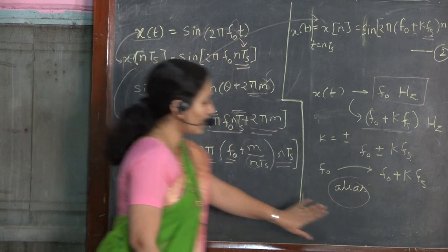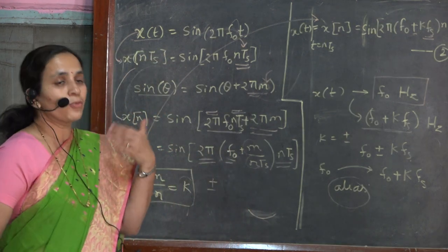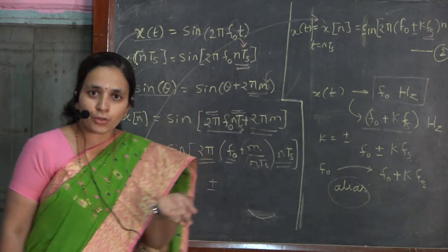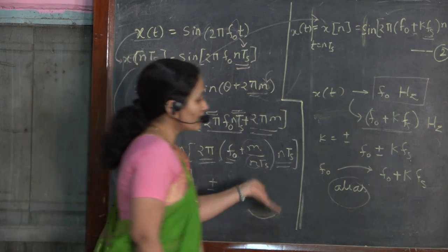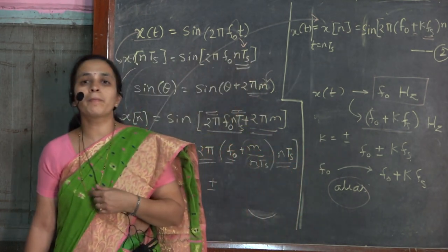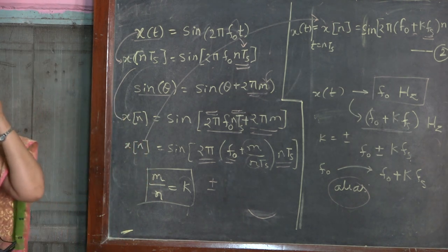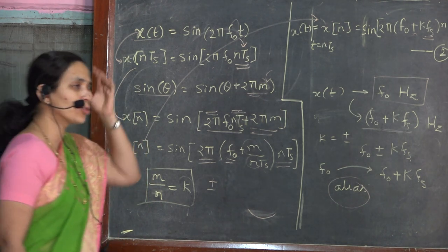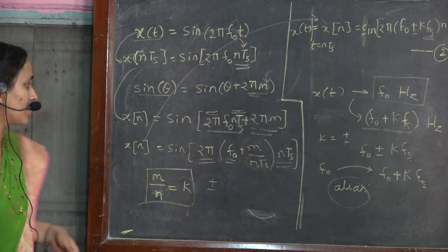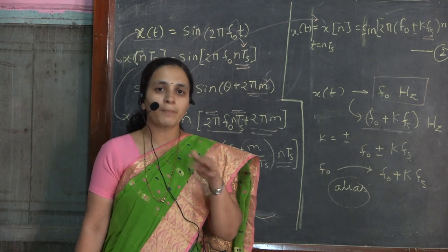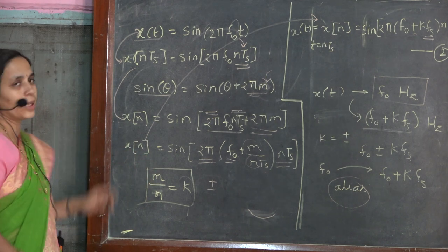To avoid this aliasing — to distinguish clearly whether the original signal holds frequency f₀ or f₀ ± k·fs — that ambiguity is removed only when we follow a particular criteria known as the Nyquist criteria, described by the sampling theorem. We are about to discuss that Nyquist criteria and sampling theorem henceforth.